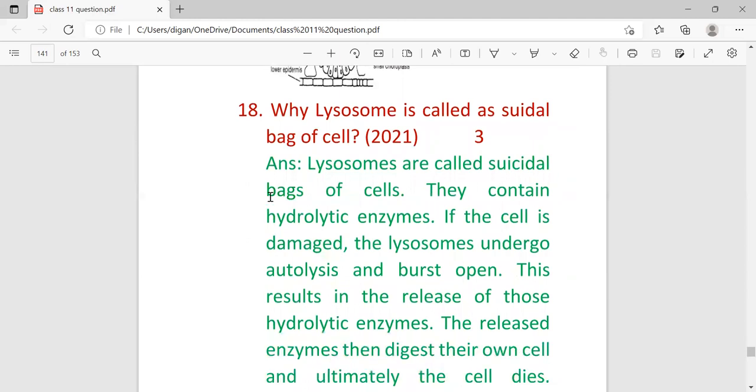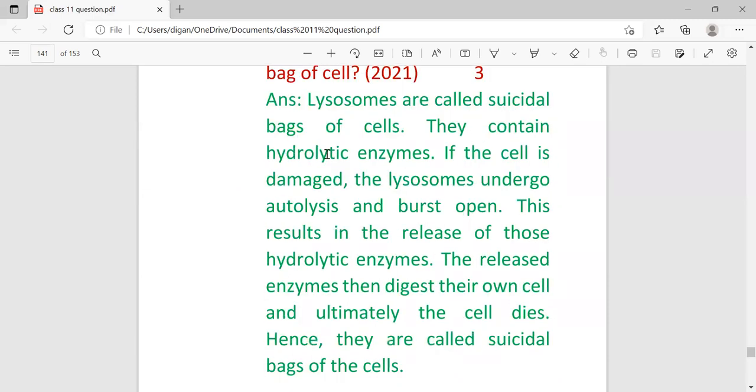This question is very important: Why is lysosome called the suicidal bag of cells? This question was last repeated in 2021, and previously it came in 2016 and 2015. Lysosomes are called suicidal bags of cells because they contain hydrolytic enzymes. If the cell is damaged, the lysosome undergoes autolysis and bursts open. This results in the release of those hydrolytic enzymes, and the released enzymes then digest their own cell, and ultimately the cell dies. Hence, they are called suicidal bags of cells.